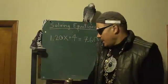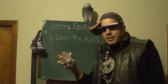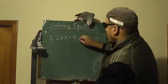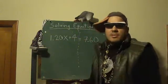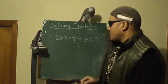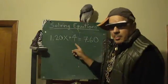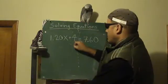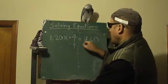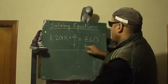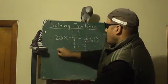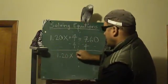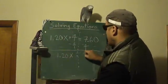So let's solve it and figure out how many sodas we're getting. Let's draw a dotted line. Let's get rid of the 4 — subtract 4? Correct. We're going to subtract 4 from this side and subtract 4 from that side. And we're left with 1.20x equals 7.60 minus 4, which is 3.60.